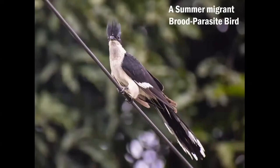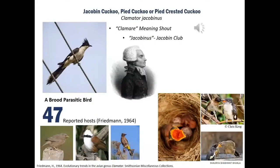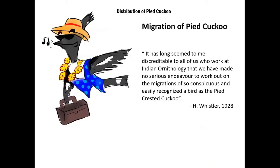The Pied Cuckoo is a summer migrant to northern India and a brood parasite bird. Brood parasite means it lays eggs on different host birds, and the host bird raises its offspring until they are young. This species has more than 40 recorded hosts in its entire range; however, the major hosts are mainly babblers and bulbuls. Apart from its interesting brood parasitic behavior, the bird is a summer migrant to India — it appears in the northern parts and stays till the monsoon period, and has been known for centuries in different folklore and mythology.